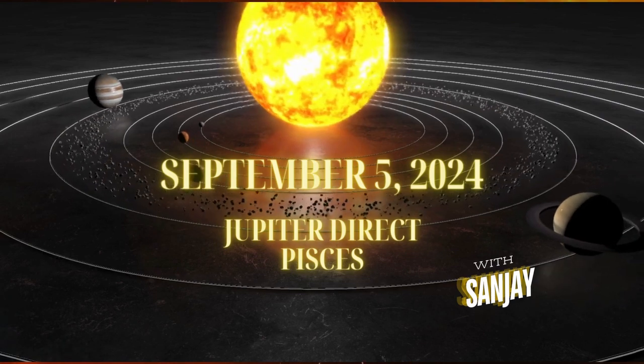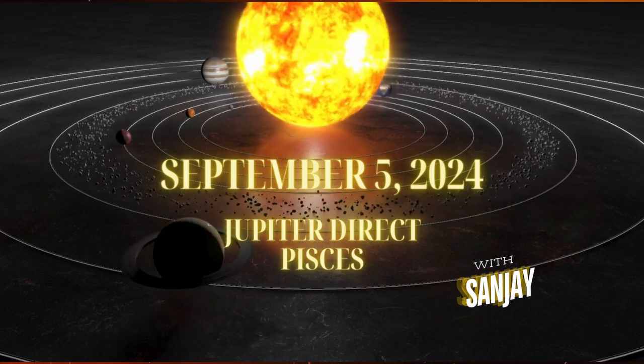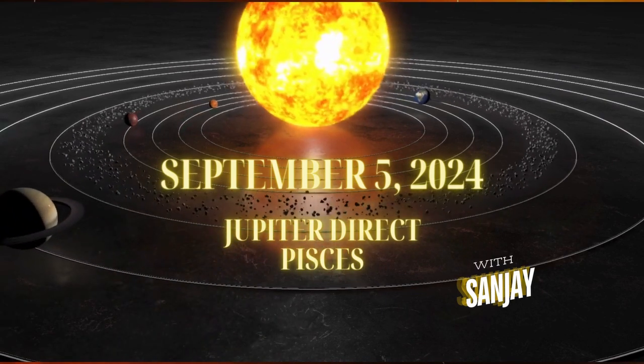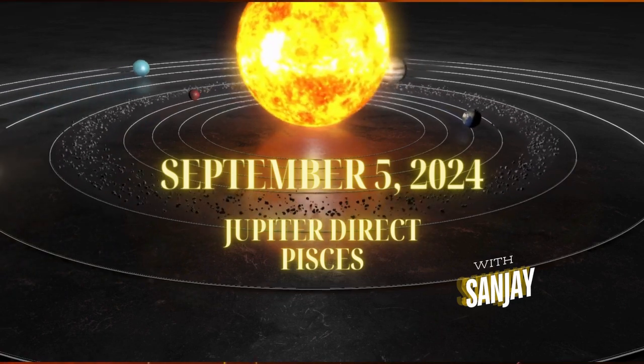Today, let's explore the cosmic energies of September 5th, 2024, as Jupiter stations direct in Pisces, heralding a time of renewed optimism, expansion, and growth in spiritual and creative pursuits.